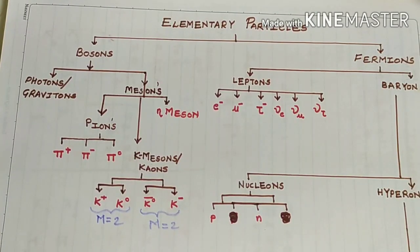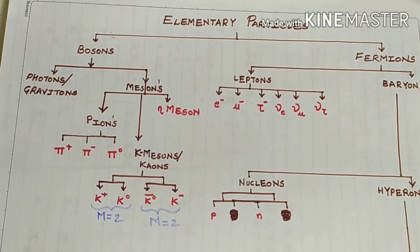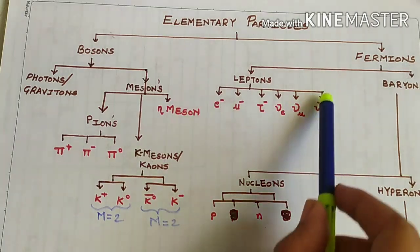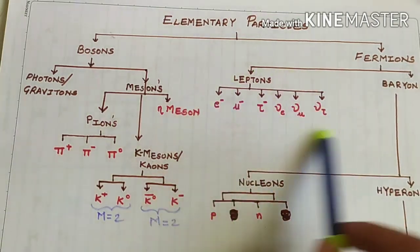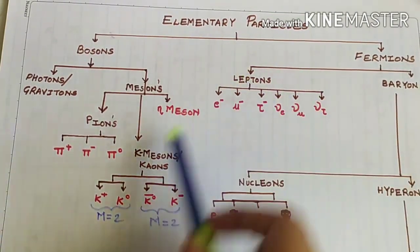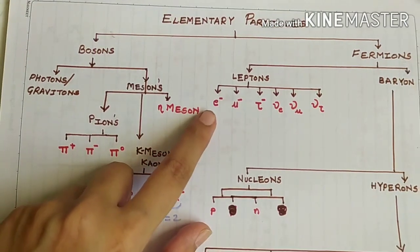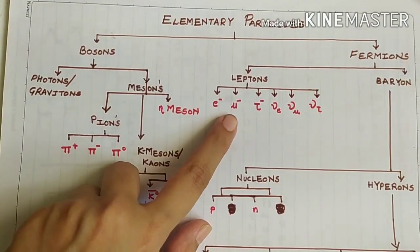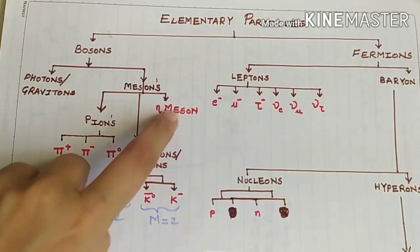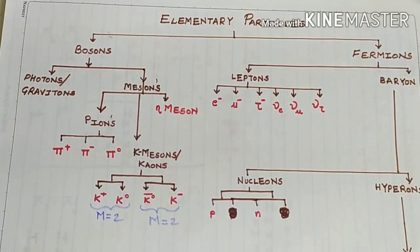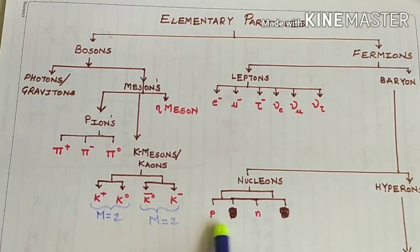The next particles we consider are leptons, but understand that leptons do not have an isospin. The isospin for all leptons would be 0. Since they are singular particles — e minus, mu minus, tau minus — all of them would have isospin 0. So we do not find any kind of isospin for leptons. Let's move on to nucleons.